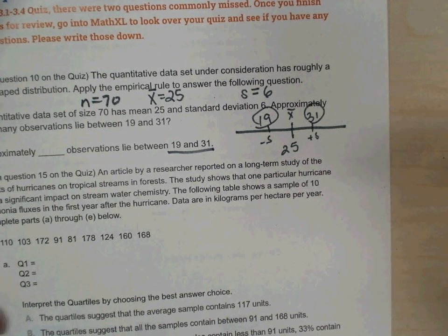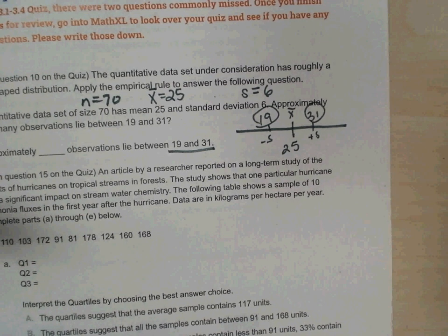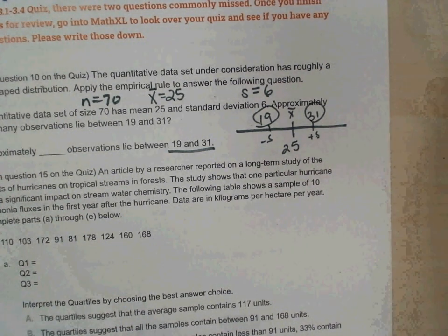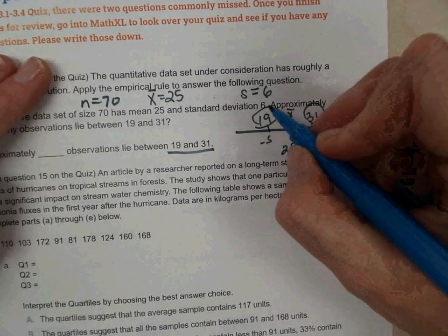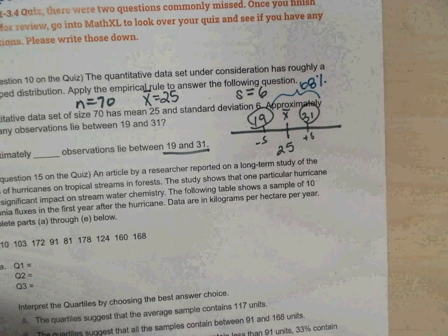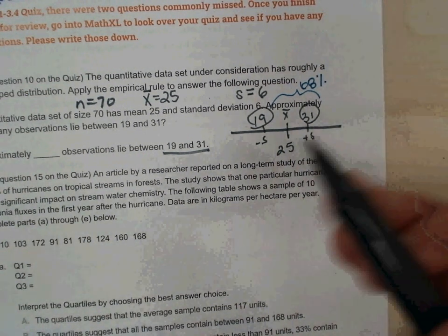And then we have to apply the empirical rule, which says what percent of the data lies within one standard deviation of the mean? That's right. So we know from the empirical rule that 68% of the data lies within that range of 19 to 31. And then one step further, we need the number of observations. Anybody know what to do next?